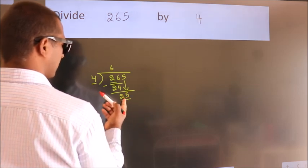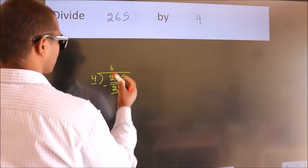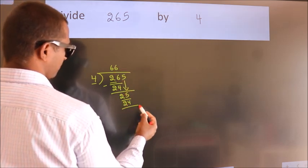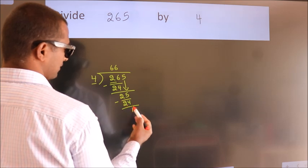A number close to 25 in the 4 table is 4 times 6, which is 24. Now we subtract and get 1.